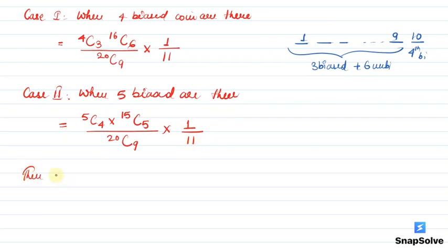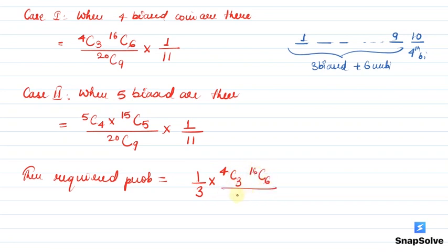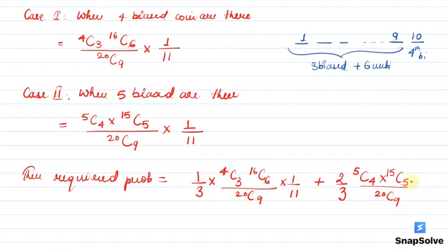तो फिर हमारी required probability हो जाएगी: probability कि 4 biased coins हों, that is 1/3, into probability of getting all the biased coins out in 10 draws, जो अभी हमने निकाली: 4C3 × 16C6 / 20C9 × 1/11, plus probability कि 5 biased coins हों, मतलब 2/3, into probability कि 9 draws में 4 biased coins आ जाएं और 10th draw में 5वां biased coin: 5C4 × 15C5 / 20C9 × 1/11।